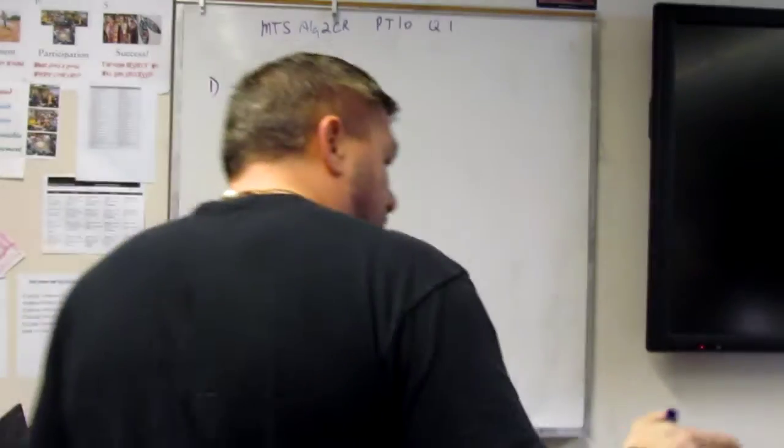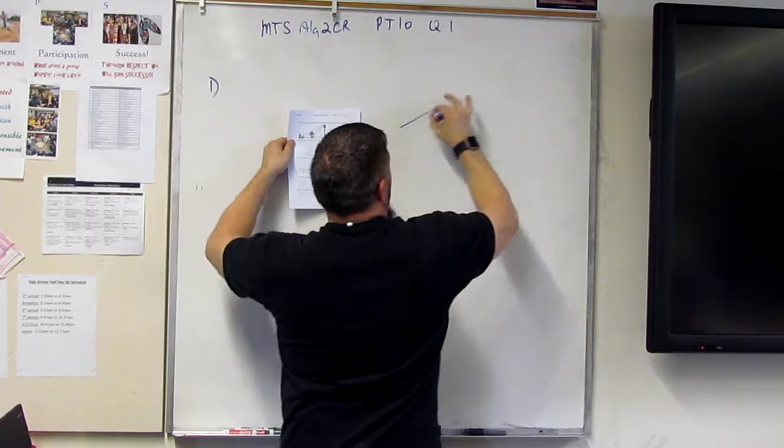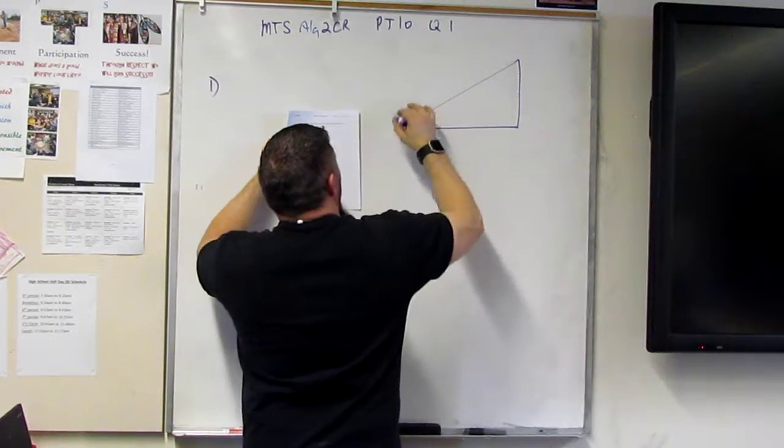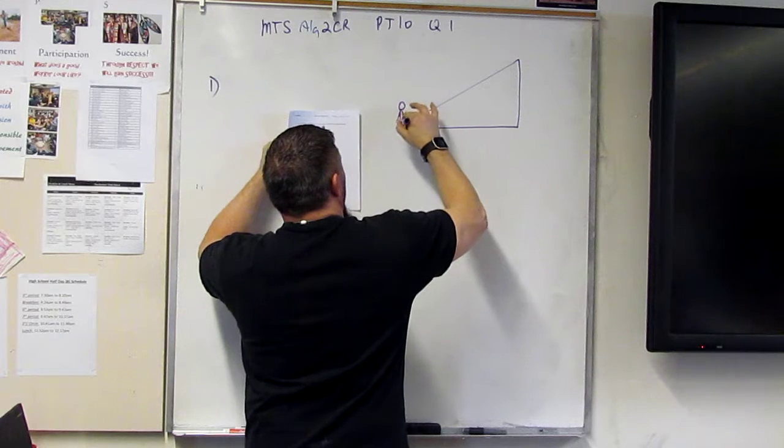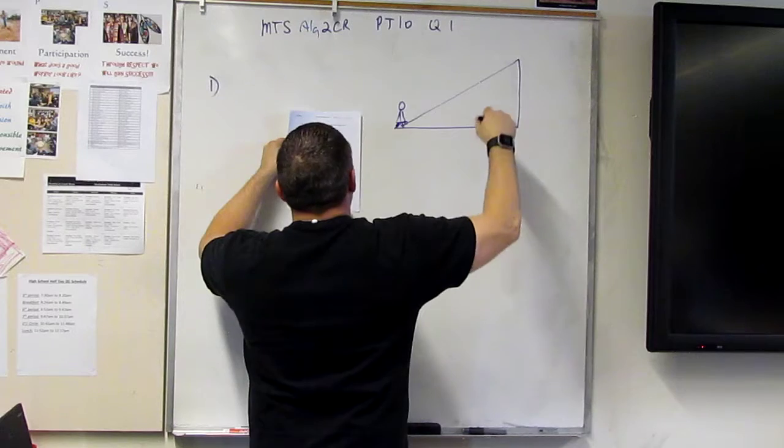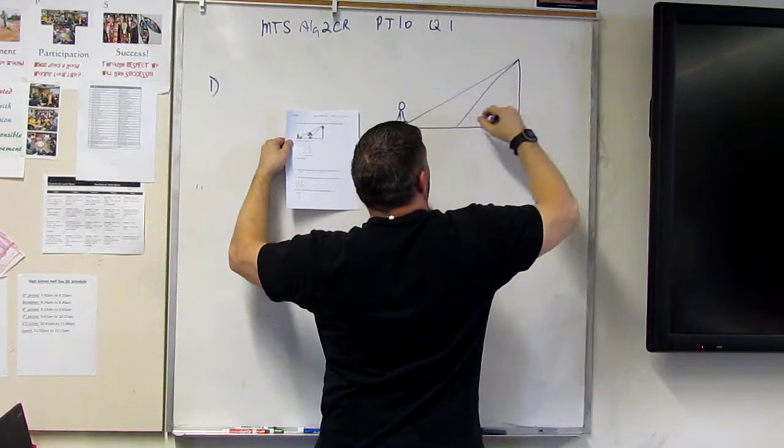All right, ready? So question one has a dog walking. So he's walking his dog, right? And he's got this tree, right? Okay.